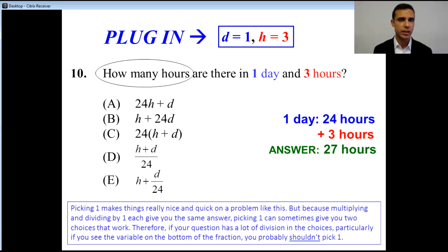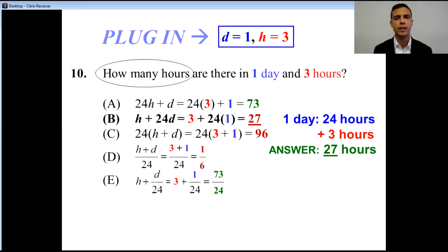Because we've chosen the numbers, all we do is now take a look at the answer choices, use the numbers that we've selected, d equals one and h equals three, and see which one gets us the value of 27. When we put them all in and we take a look at b, we've got three plus 24 times one is 27.